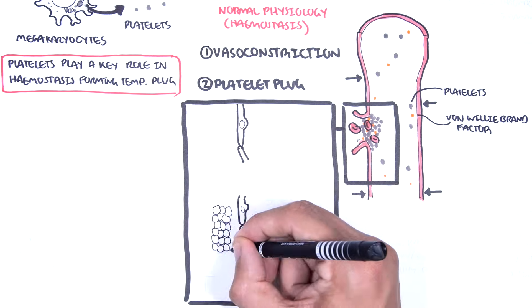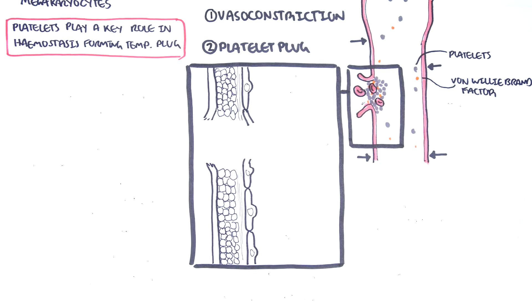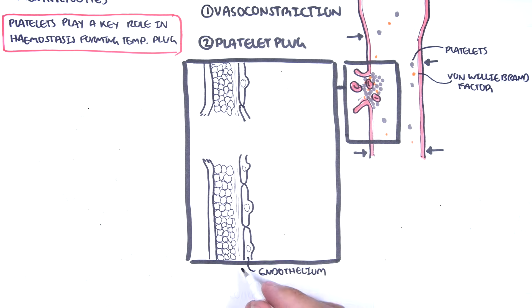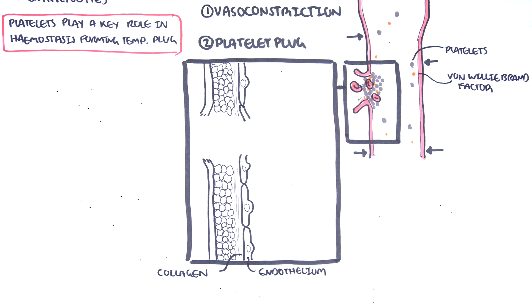Zooming into the area, on the right is the lumen of the blood vessel, the endothelial lining, collagen layer, and smooth muscle cells.